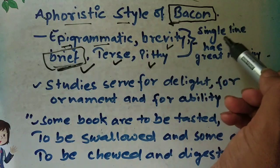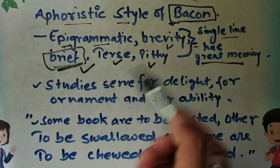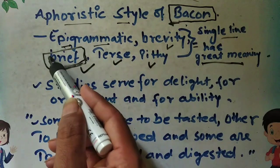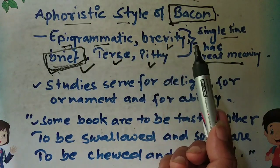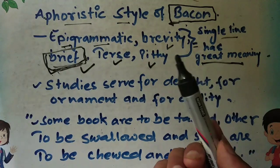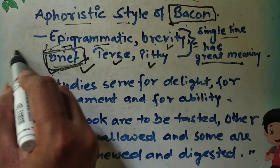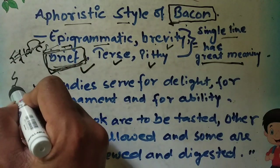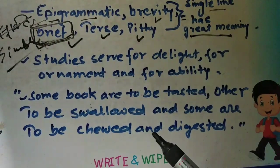Simply put, it is a brief line that carries a great meaning. When you read Bacon's essays, you will find that a single line is of great value — using brevity in your sentence while giving value to humankind. In Hindi, we know the word 'sukti' — a simple line carrying a great value or great lesson.